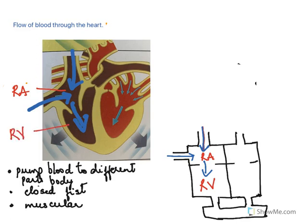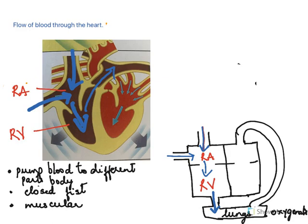This is deoxygenated blood. From the right ventricle it flows through the pulmonary artery to the lungs, where it gets oxygenated. Now the blood is oxygenated and returns back to the heart. The vein that brings the oxygenated blood back to the heart is called the pulmonary vein.